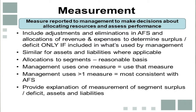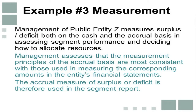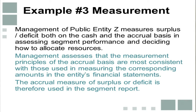Management is also required to provide an explanation of the measurement of the segment surplus or deficit, including the basis used, whether there were any changes from the previous year, and the nature of asymmetrical allocations where allocation between segments is not on an equal proportionate basis. For example, where management measures surplus and deficit on both a cash and an accrual basis, management assesses that the accrual basis is most consistent with the measurement principles used in the entity's financial statements, and therefore the accrual measure is used in the segment report.